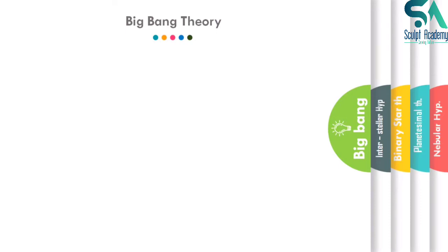The next theory is a modern theory known as the Big Bang Theory. Until now, what we have studied are all theories explaining the origin of earth and our solar system. But from this point, philosophers and astronomers started thinking on a bigger question — how did the universe originate? And here comes into picture the Big Bang Theory.